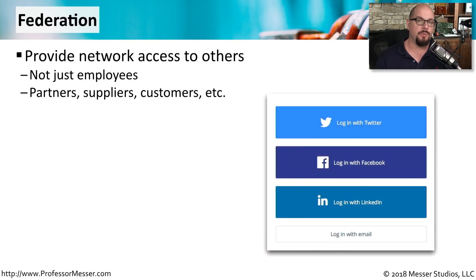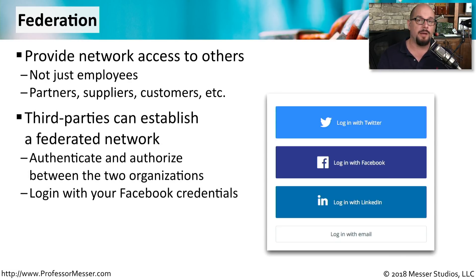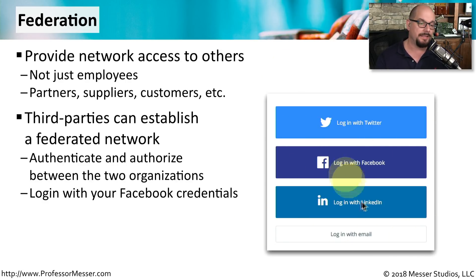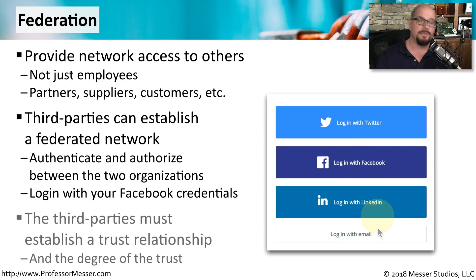If you have services you want available to as many people as possible but don't want to create separate accounts for every user, you can use a federated network to authenticate and authorize between two different organizations. For example, a website may let you log in using existing Twitter, Facebook, or LinkedIn accounts. This is a formal trust process between organizations — the password and account information is not shared; instead, authentication is passed to the third party, which validates it and provides clearance back to the original site.